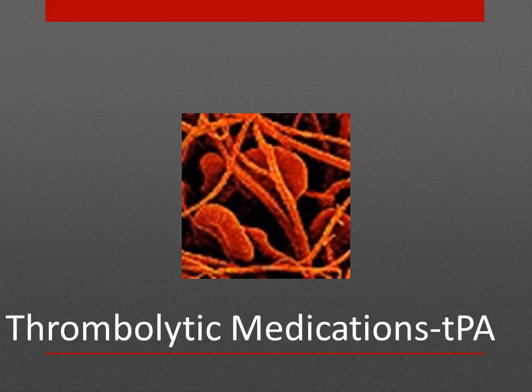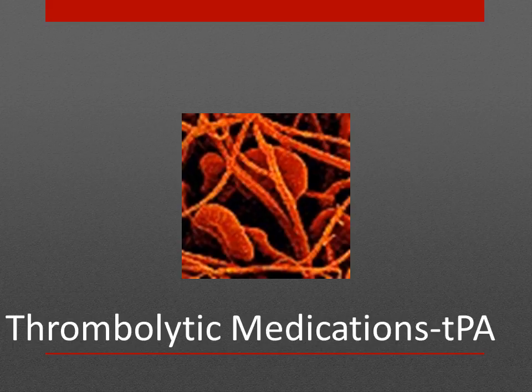Thrombolytic agents dissolve clots. tPA, or tissue plasminogen activators, are one example. These medications need to be given within 60 minutes of the onset of a stroke to minimize the severe symptoms that can result. When patients are on these medicines, clotting is disrupted, so blood tests are done to monitor clotting. We do not want the blood too thin. Common blood tests that evaluate clotting are the PTT (partial thromboplastin time), PT (prothrombin time), and INR (international normalized ratio).